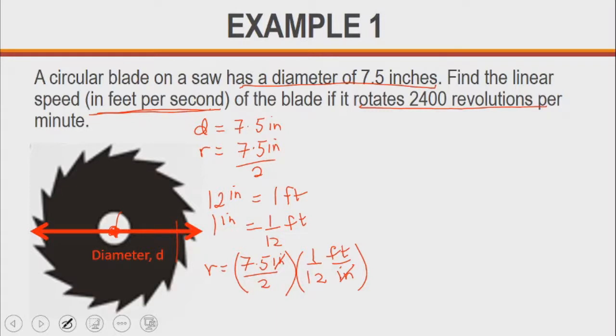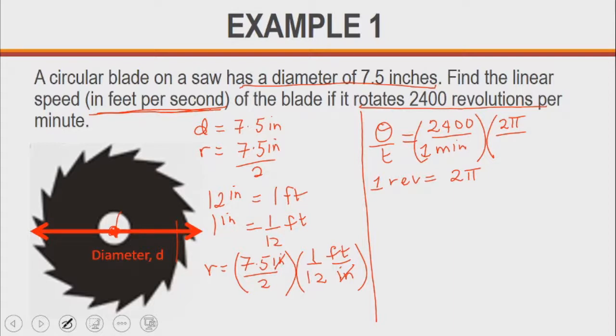Now let's come to the revolution. We are told that the blade makes 2,400 revolutions per minute. We are given theta per time all in one. So it's 2,400 revolutions, and we know that one revolution equals 360 degrees or 2 pi radians. To convert revolution to radians, we multiply it by 2 pi radians per revolution, divided by 60 seconds per minute because we have to convert that minute to seconds.